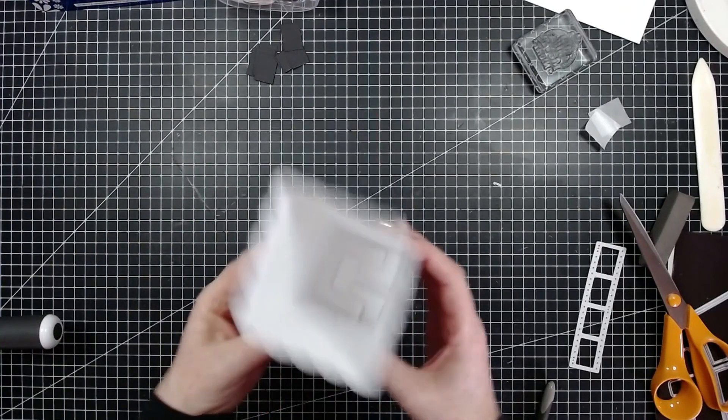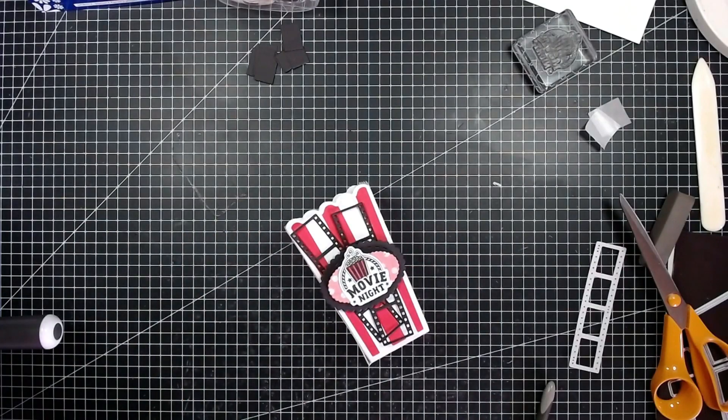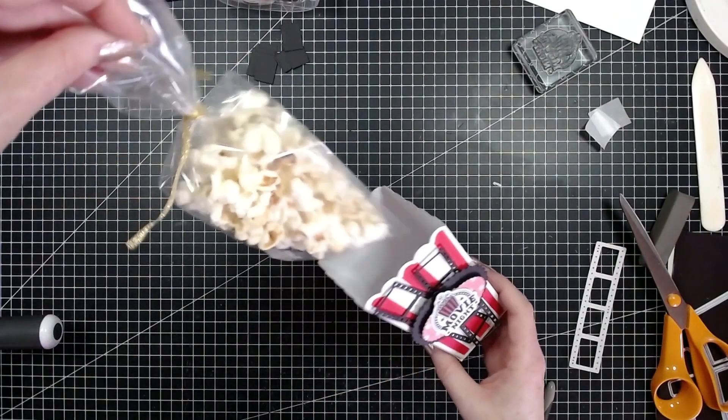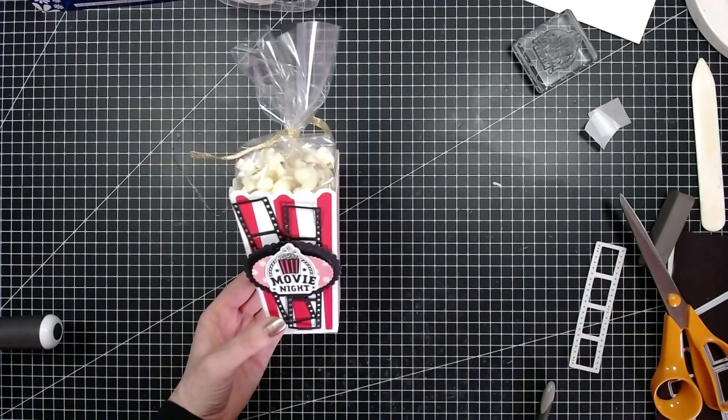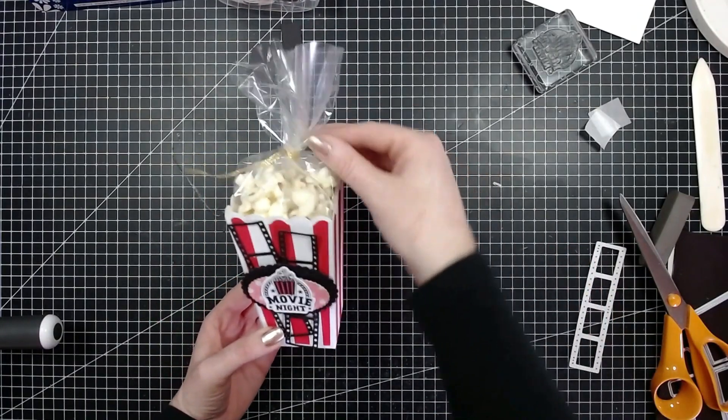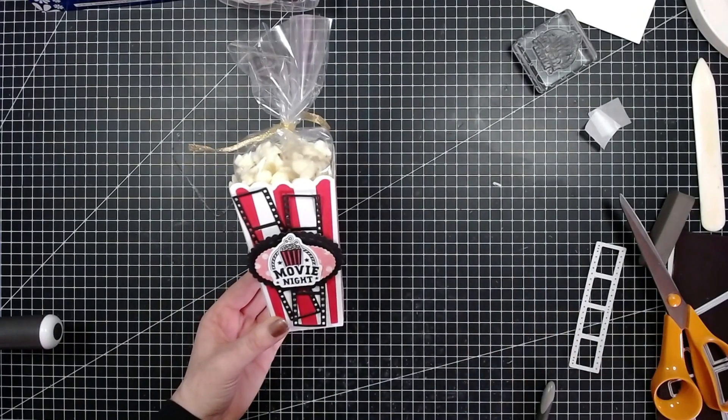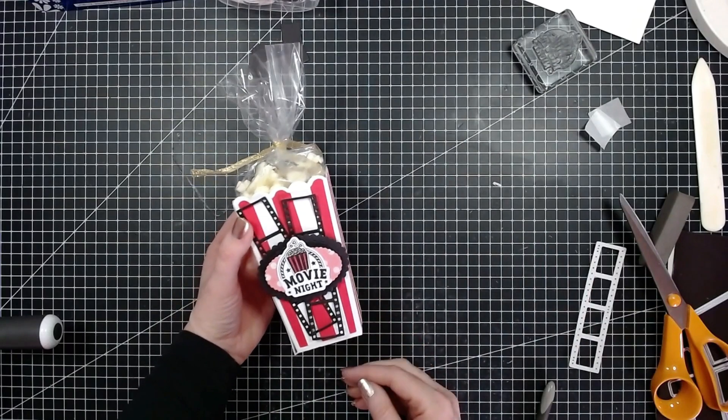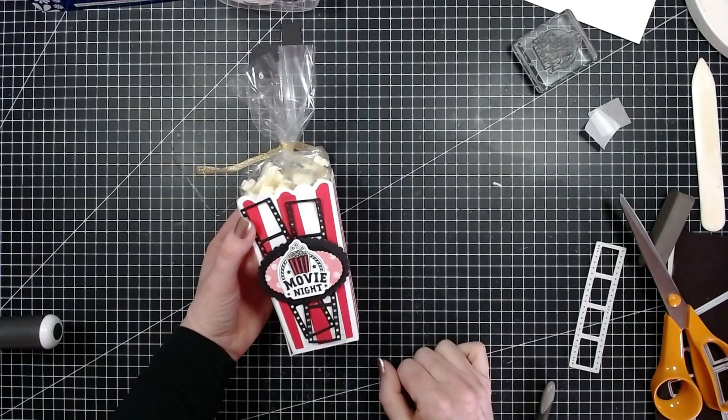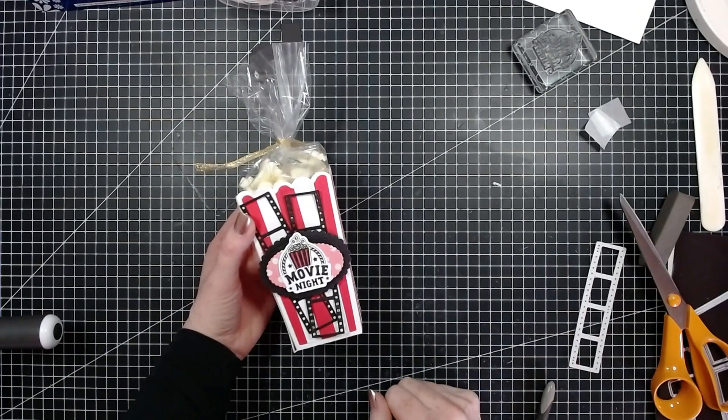Okay, and that is our popcorn box. I'm just going to pop some popcorn in. There is the popcorn box—super easy to make. You can make a whole heap of these in advance, keep them flat, glue them together when you're ready to go. That is the popcorn box, so thank you very much for joining me today. Give me a thumbs up if you like this video and I'll see you again soon.